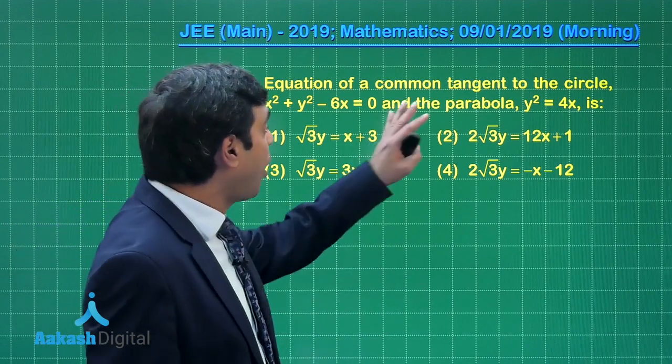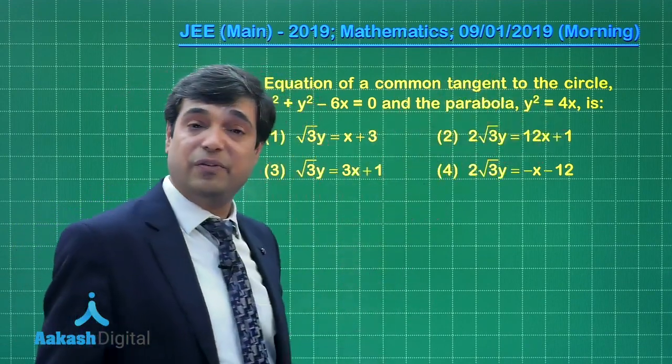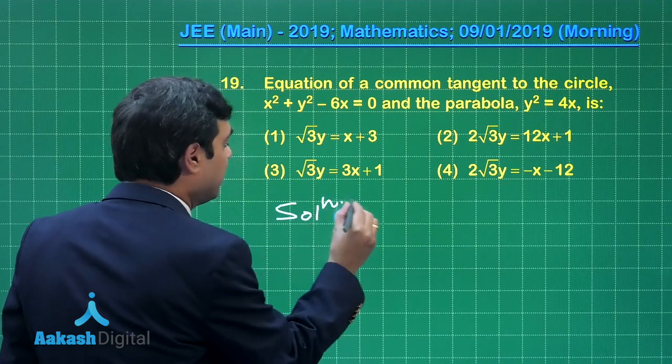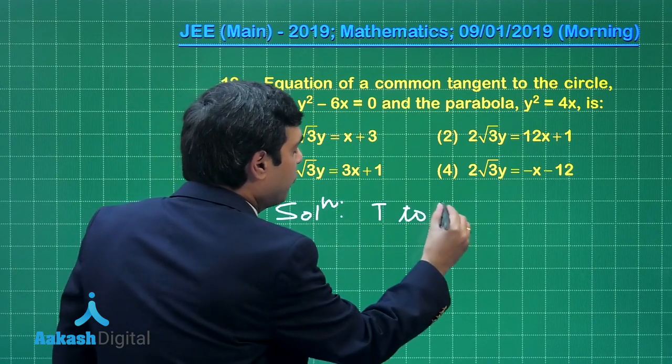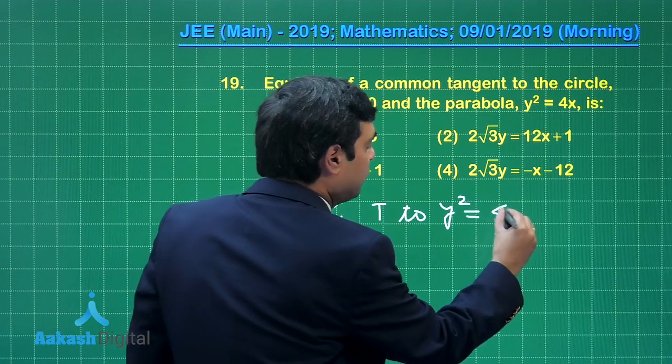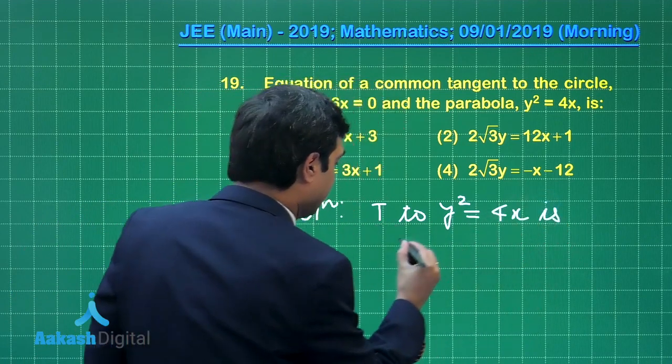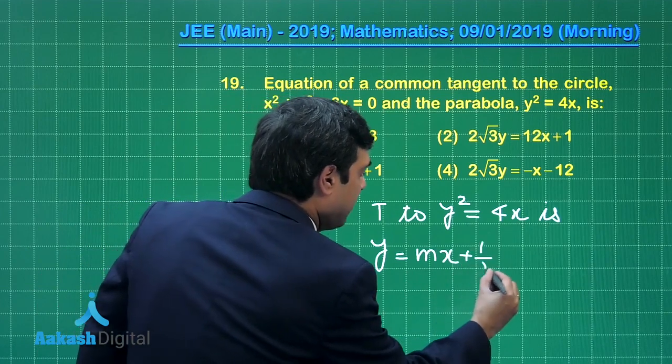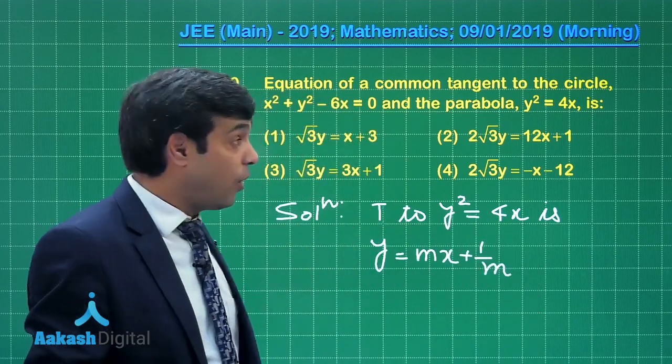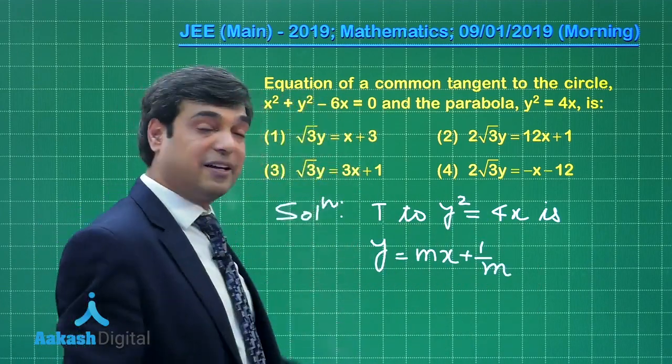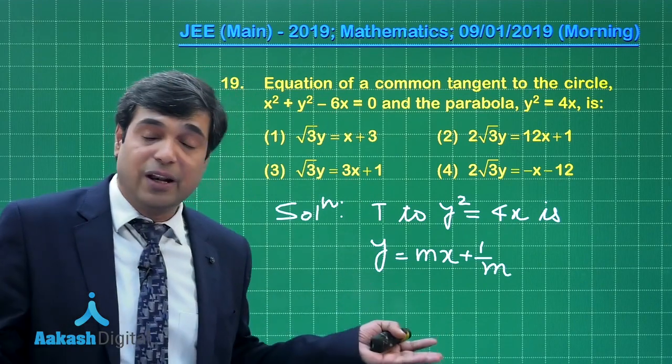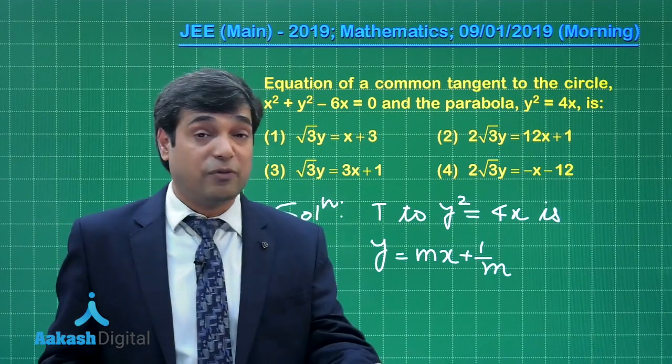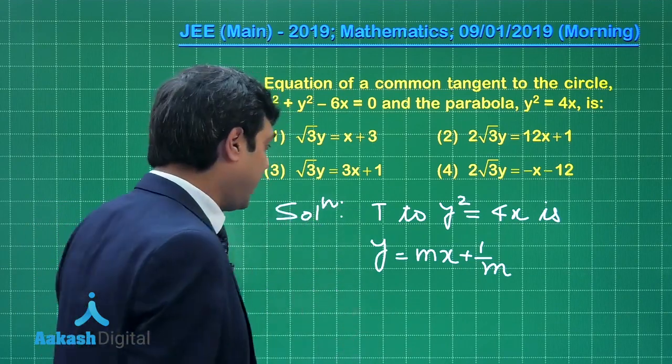We take the equation of common tangent. Let us begin with it. Tangent to y² = 4x is y = mx + 1/m. This is clear. Now this is also touching the given circle. What is the condition for a line to be tangent to a circle? Simply length of perpendicular from center to the line is equal to radius.